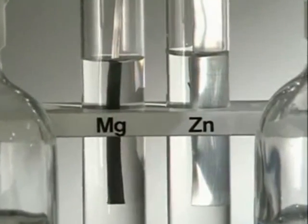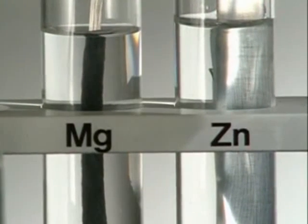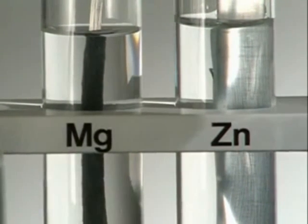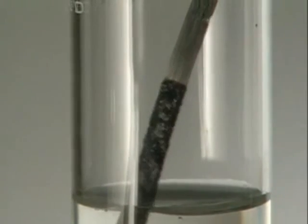Nothing happens to the zinc strip on the right. But magnesium reacts instantly, displacing the zinc from solution. Magnesium is the winner. It's the most reactive.